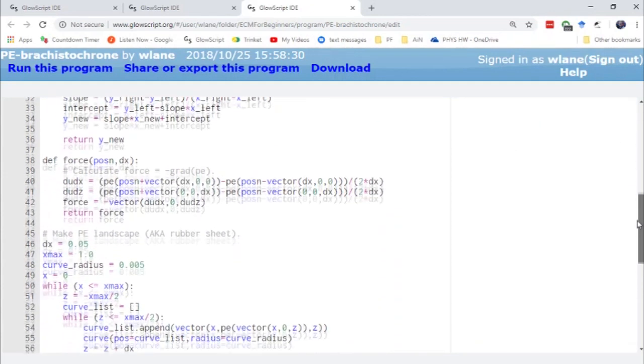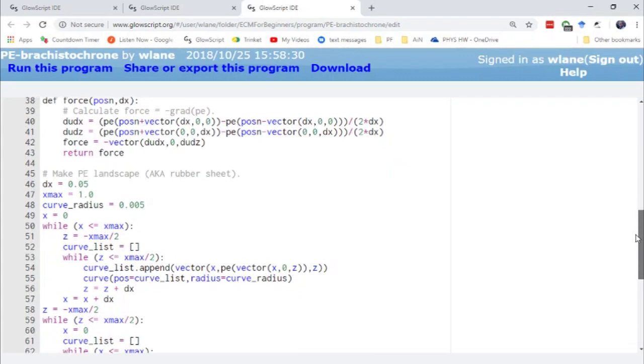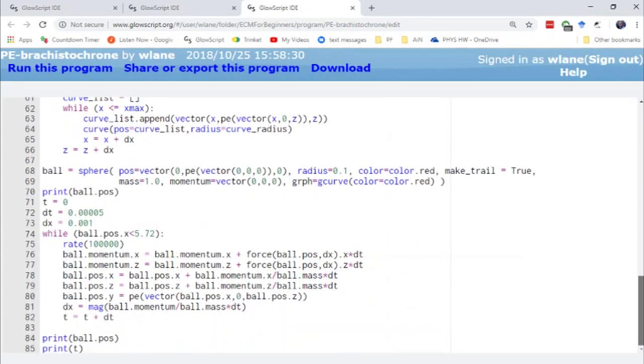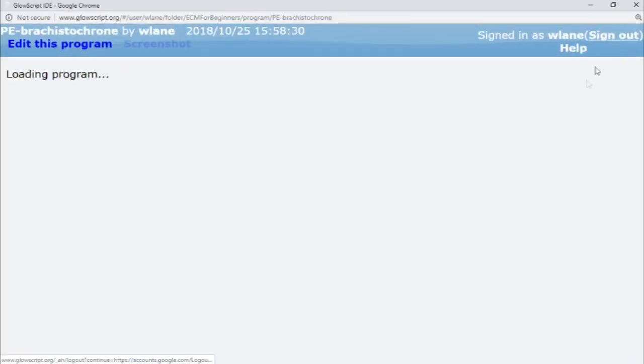But basically, the rest of the code proceeds as usual. We calculate the force from the potential energy. The force goes into the Euler-Cromer method here. So really, the only thing that's changing is we're making our potential energy function a little bit more complicated by having this linear interpolation. But let's hit control 2 and watch this thing in motion. So here is our cycloid function.